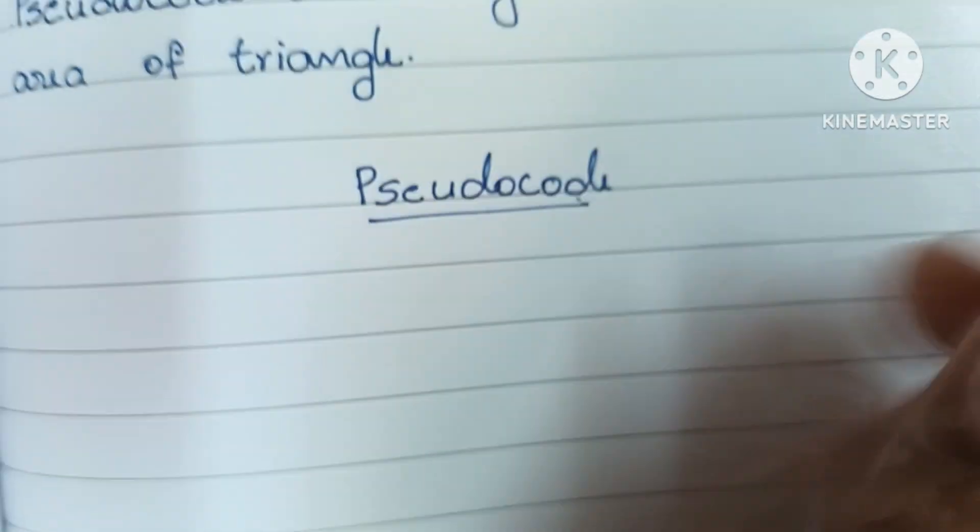To summarize the pseudocode to find the area of a triangle: first input three variables a, b, c — the three sides of the triangle. Next calculate the semi-perimeter: s = (a + b + c) / 2. Then calculate the area: A = sqrt(s × (s − a) × (s − b) × (s − c)). Finally print the output value A. This pseudocode is written in a user-readable form.